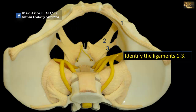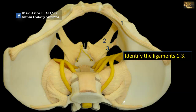Identify the ligaments 1 to 3. Ligament 1 extends between the anterior superior iliac spine to the pubic tubercle, and this is the inguinal ligament — in fact, this ligament is the inferior free border of the aponeurosis of the external oblique muscle. Ligament 3 extends from the ischial spine into the sacrum, so it is the sacrospinous ligament, and on its inner surface lies the coccygeus muscle.